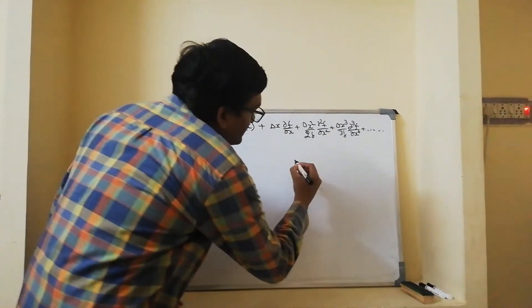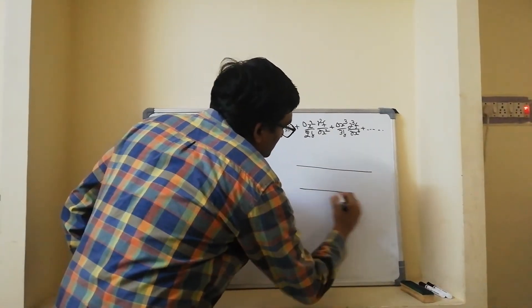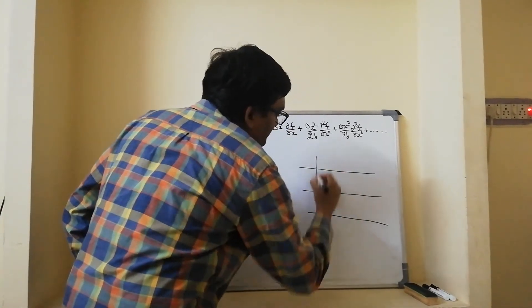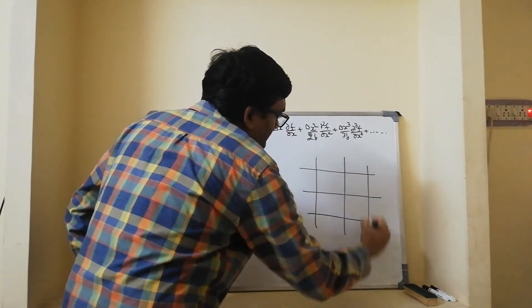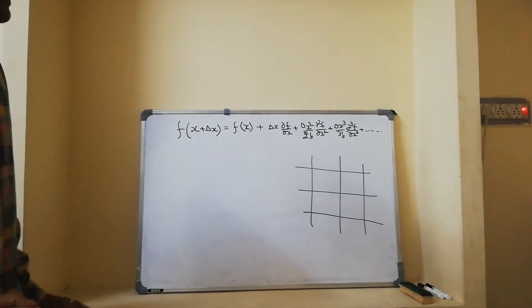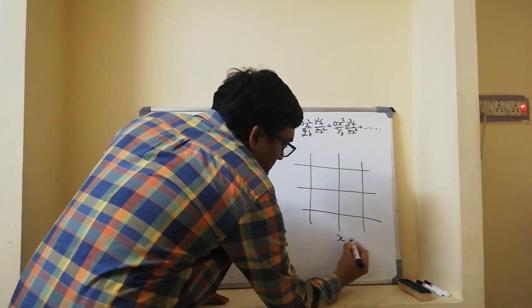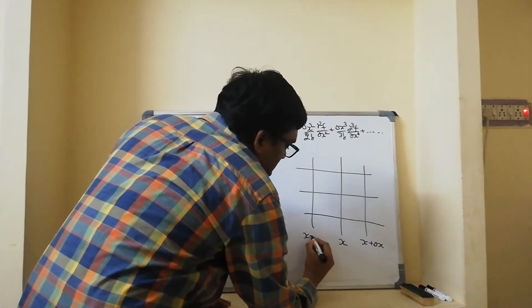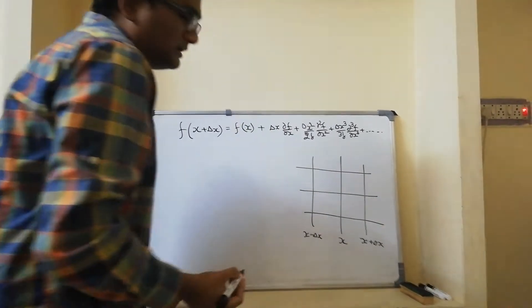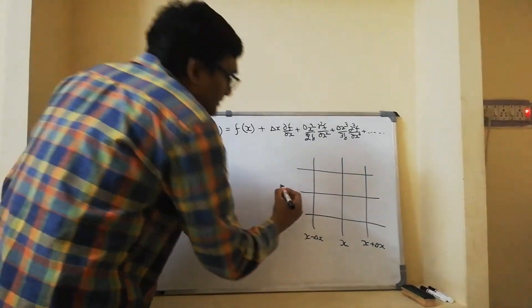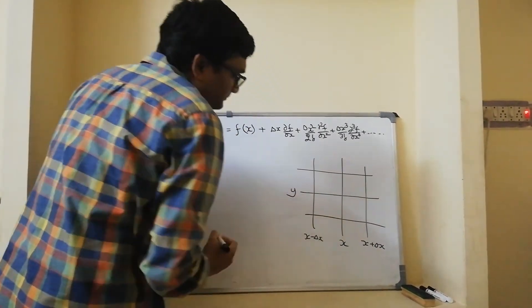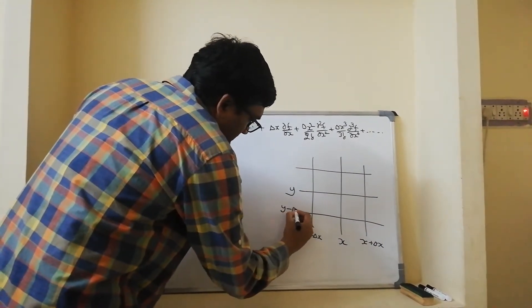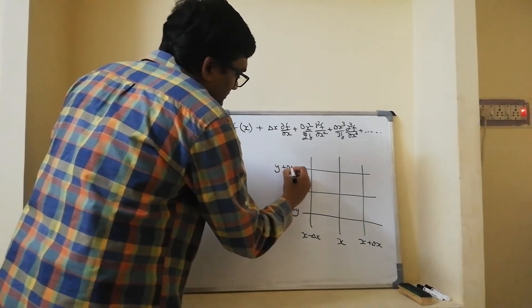Let me consider a grid, a two-dimensional grid. Let me say that this is location x, this is x plus delta x and this is x minus delta x. Similarly, I can have location y here, y minus delta y here and y plus delta y here.